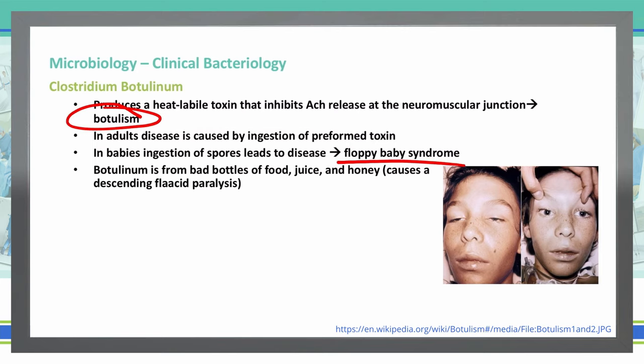So where do these spores come from? You can get them from bad bottles of food or juice. But one of the most commonly tested sources is honey. Honey can have botulinum spores inside, and this is why we do not give honey to infants less than one year of age, because their body would not be able to handle ingestion of those spores. In this picture, we see a 14-year-old with botulism showing weakness of the eye muscles and drooping eyelids. This patient was fully conscious when the photos were taken — he just had no ability to open his eyes.